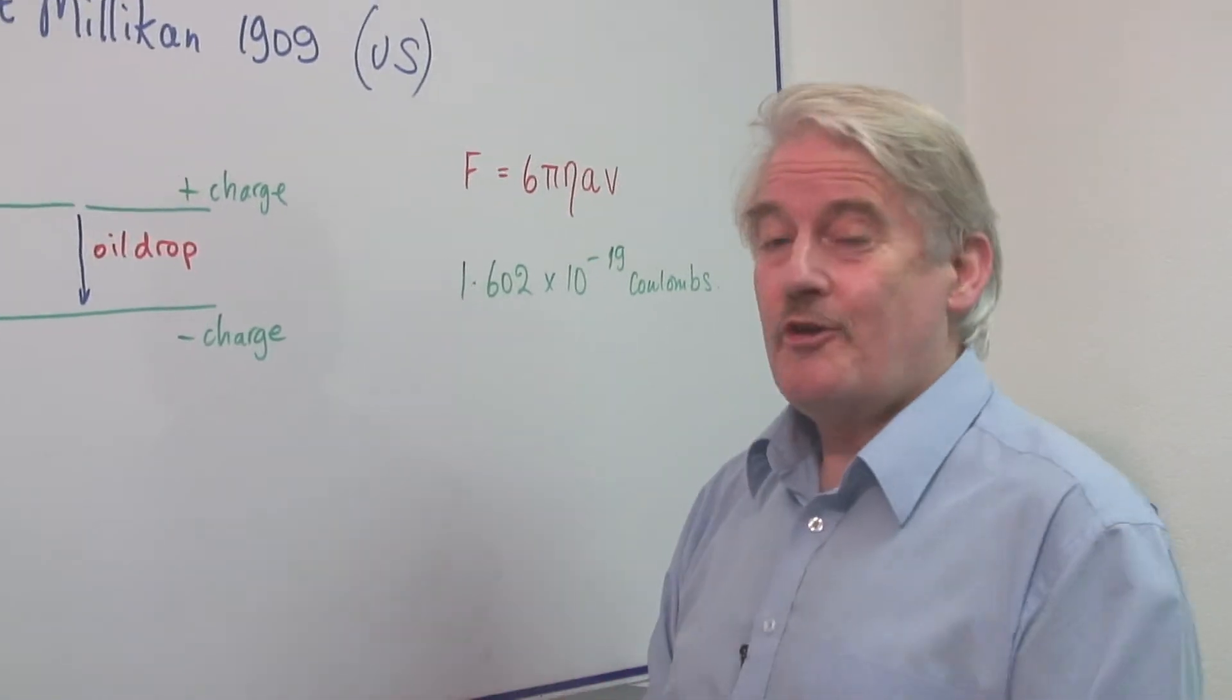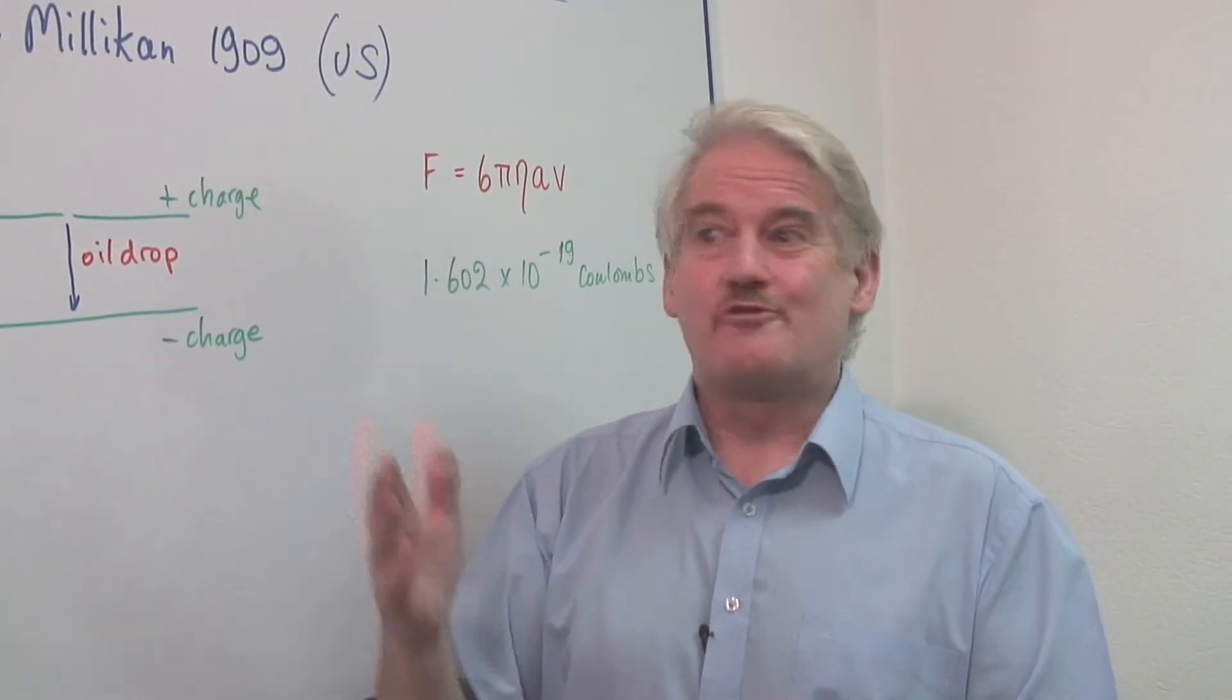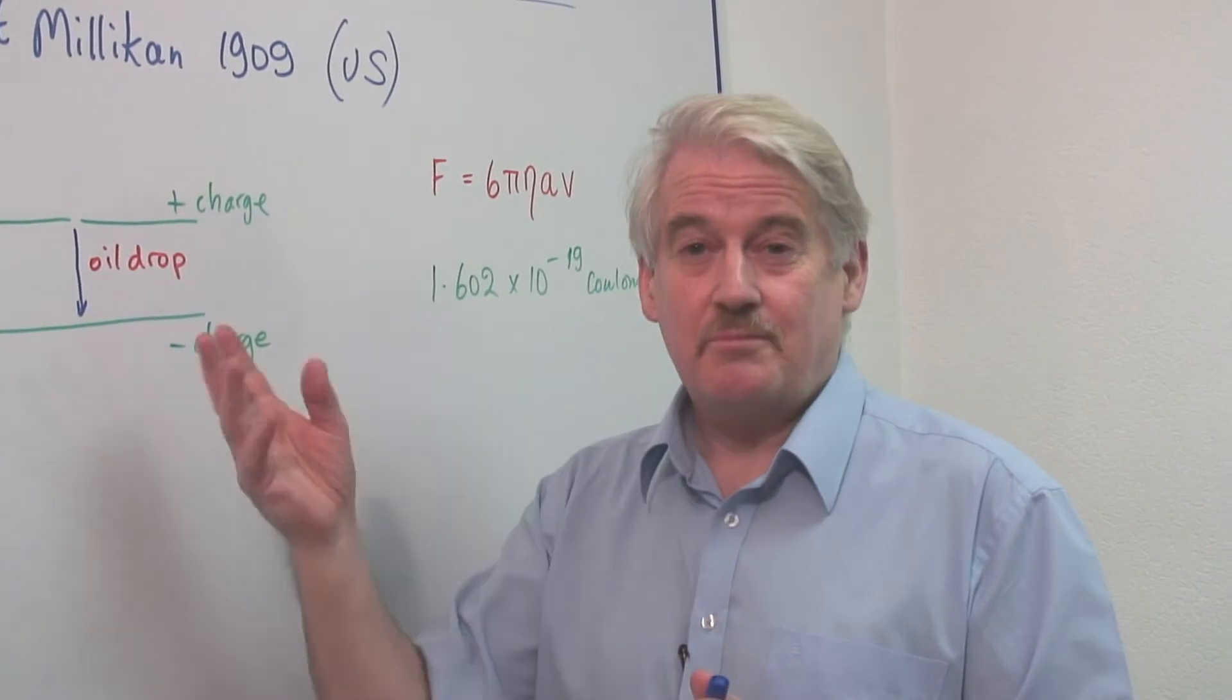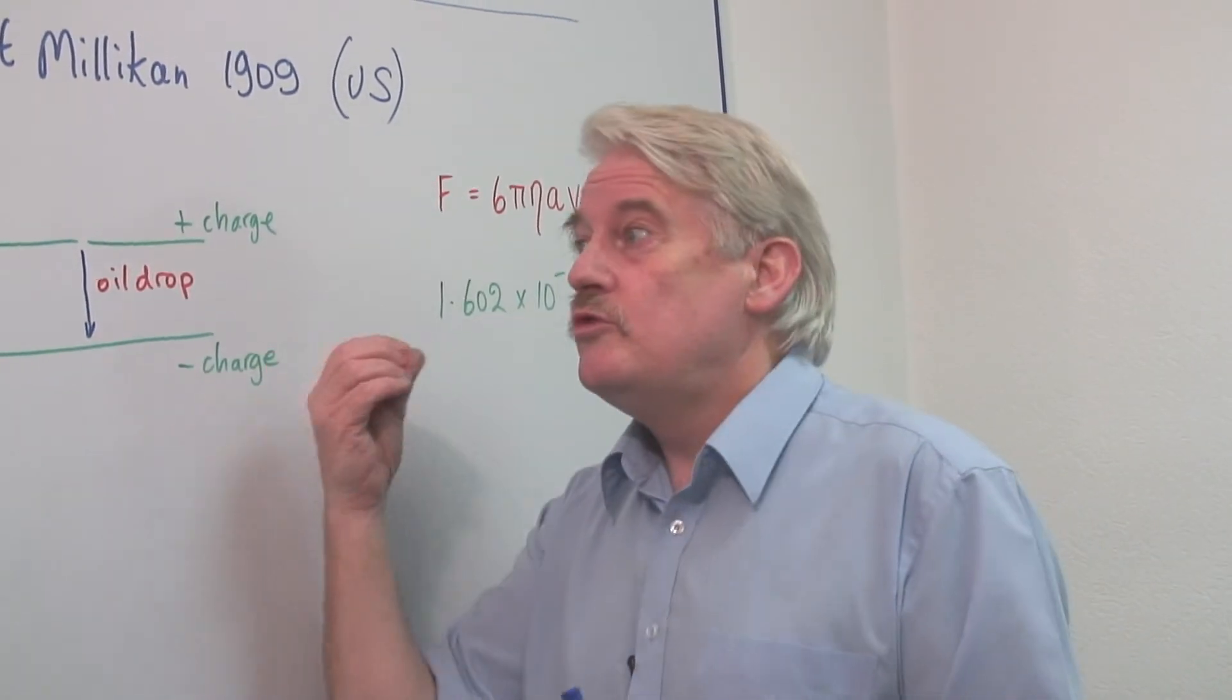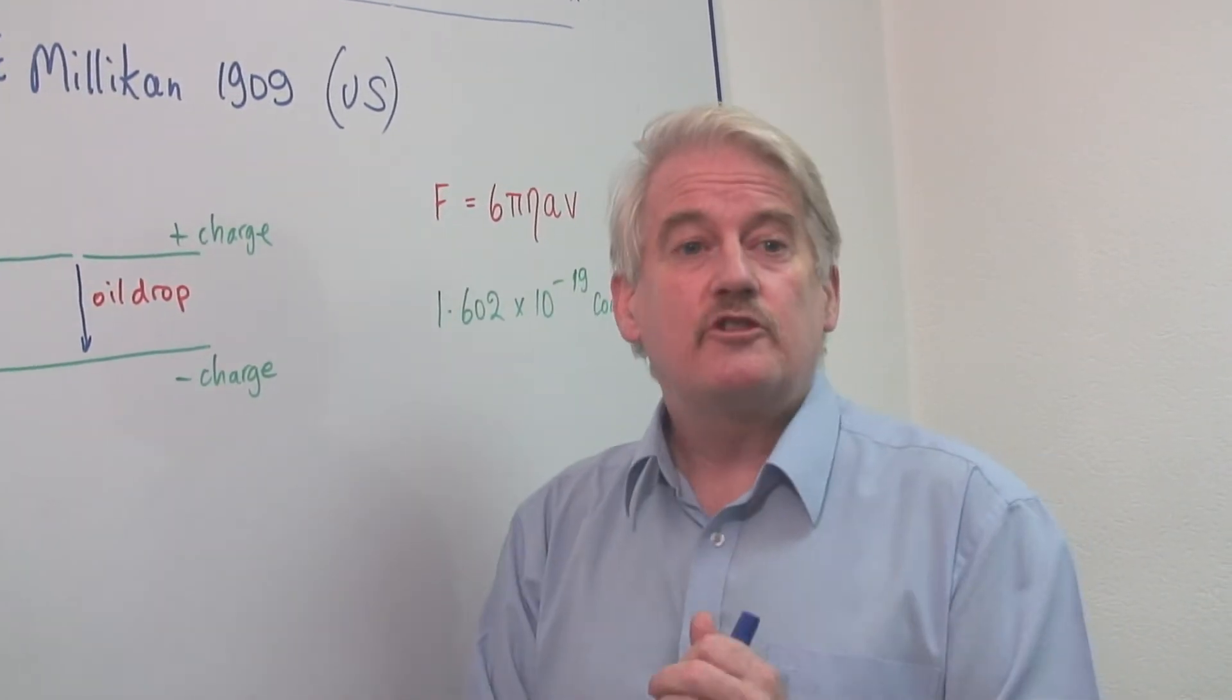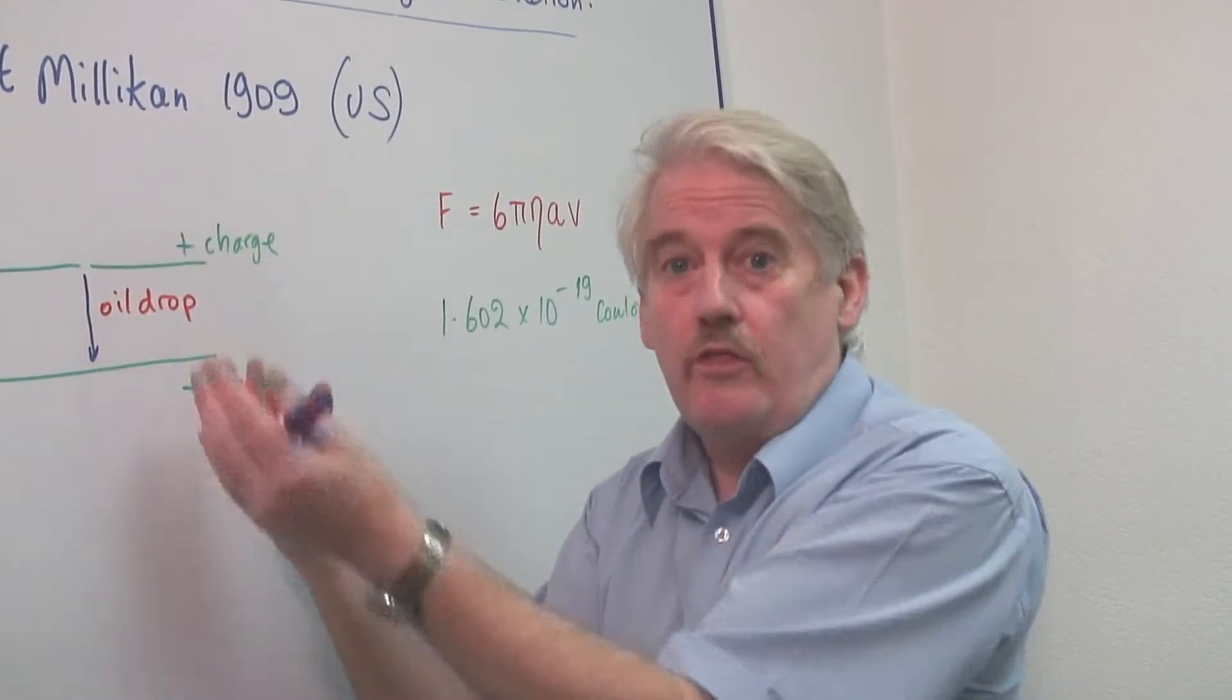So in this way, you can observe through the microscope the speed at which this particle falls. From that, you actually determine its radius, the radius of the particle. And you know, then, from that, you can work out the charge on the particle.